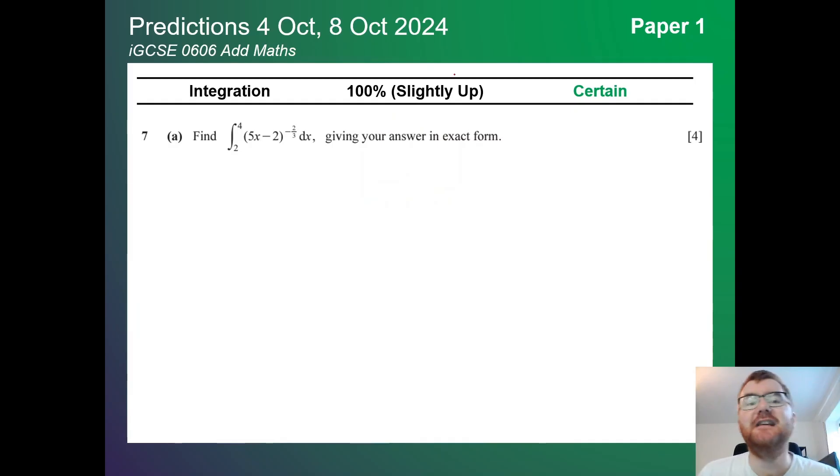And integration, its twin of course is also in the paper. Probably not as much as you think, only 100%. Usually differentiation is the big topic but integration is also important. Notice that keyword exact form as well. It's also crept into this. You're expecting some kind of natural log or e again. That usually pops up in these questions.